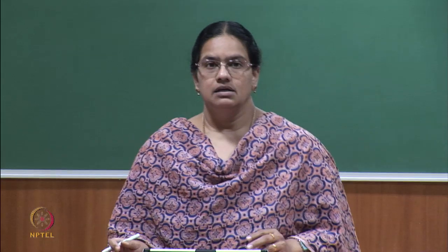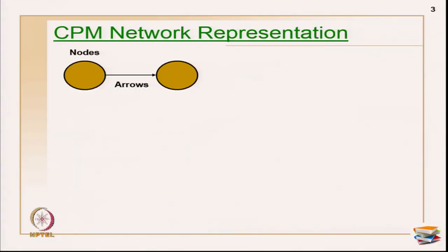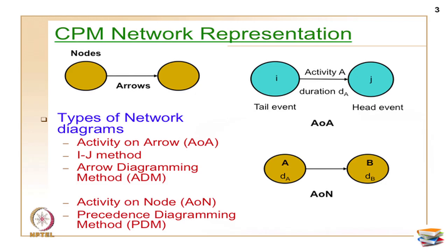CPM network representation generally has two terminology elements: nodes, which are generally circles or rectangles, and arrows. In the two types, the way you represent activities along nodes or arrows gives us the two methods. There are two broad categories: one is called activity on arrow diagram, famously called AOA, and the other is activity on node diagram, which is the AON method.